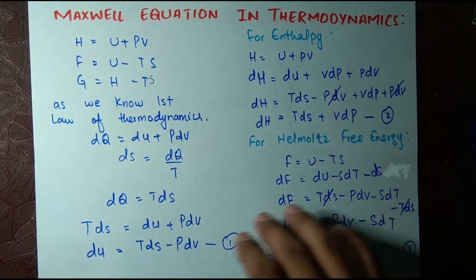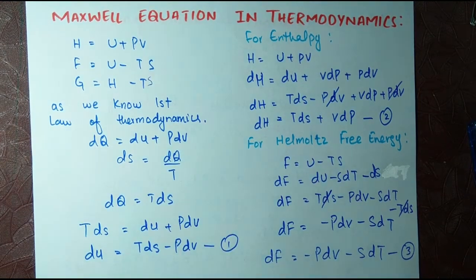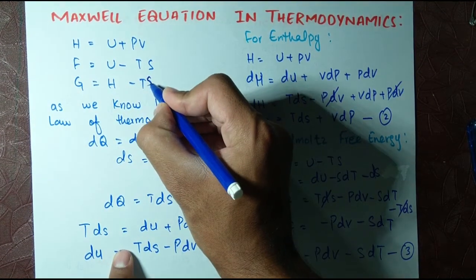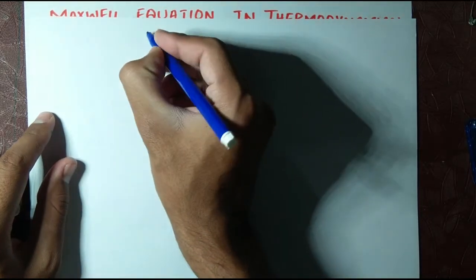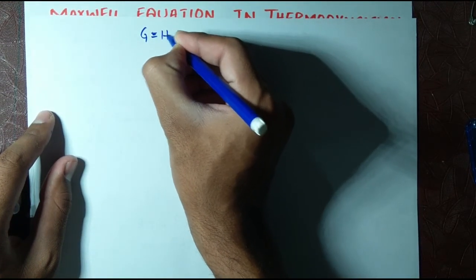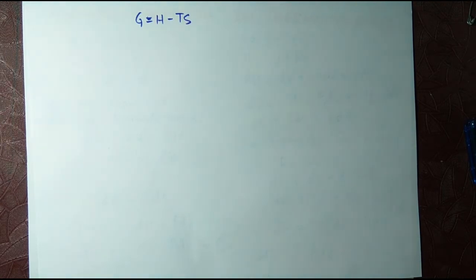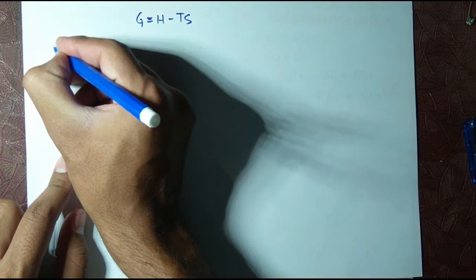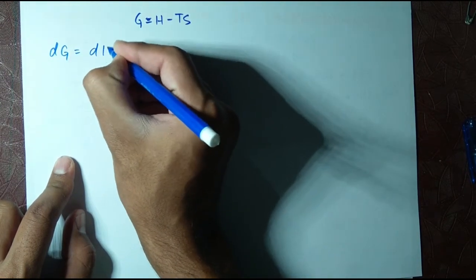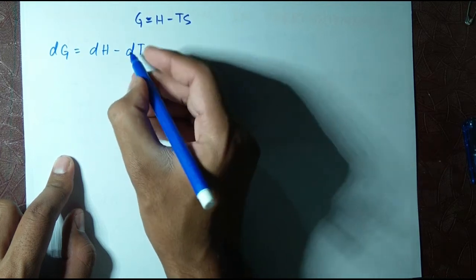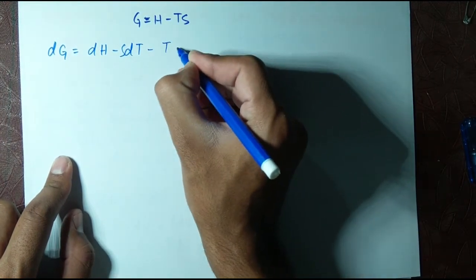For our fourth equation, starting from the Gibbs free energy G equals H minus TS, applying the differential operator gives dG equals dH minus S dT minus T dS.